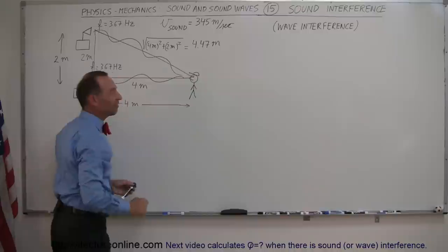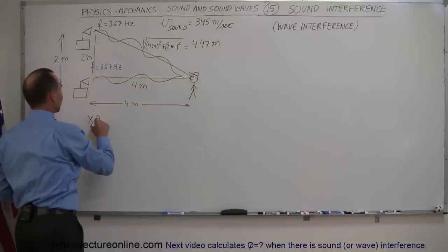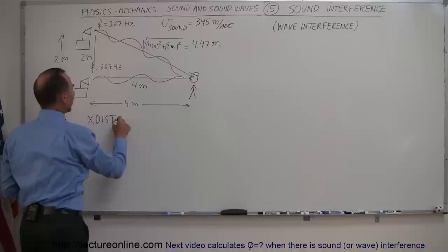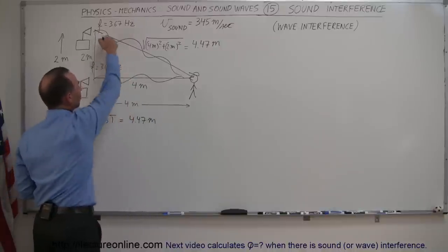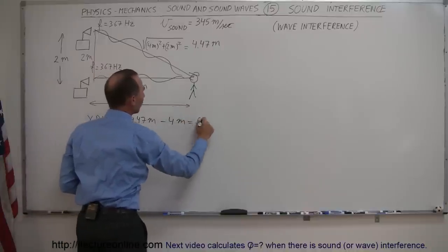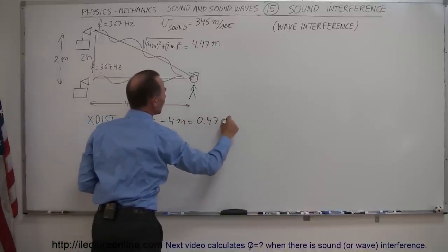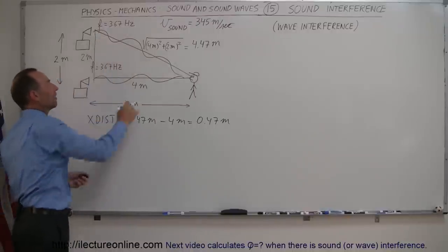which is equal to 4.47 meters. So the extra distance that the one wave has to travel over the other wave is equal to 4.47 meters for this distance minus 4 meters for this distance, which is 0.47 meters.